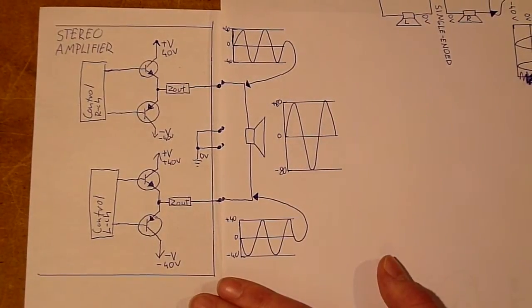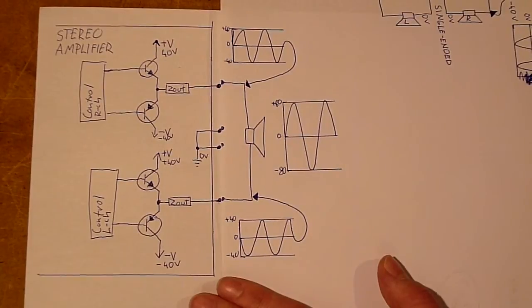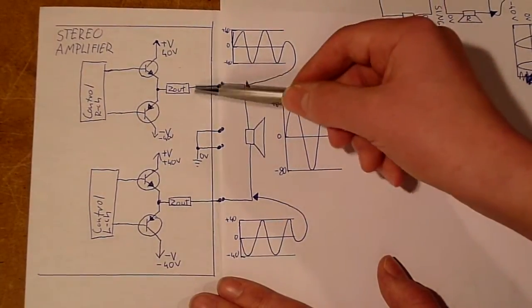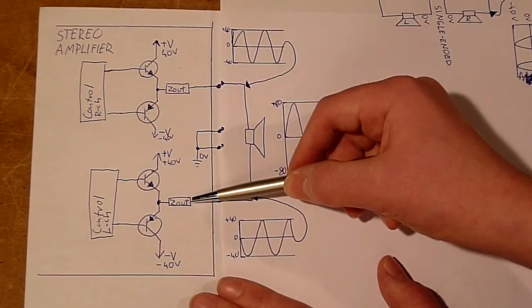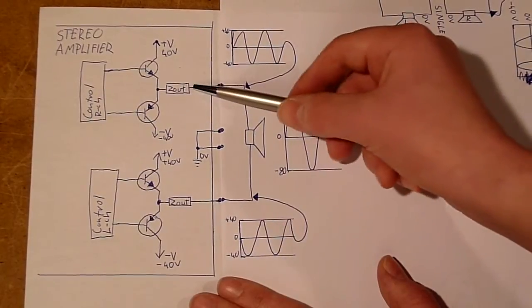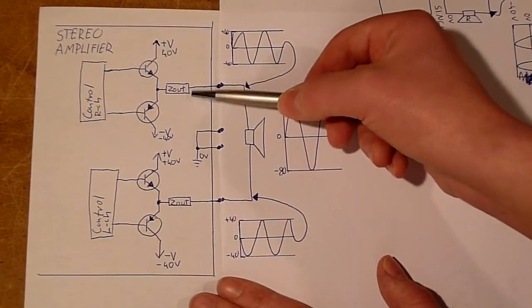However in theory there should be some drawbacks as well, because we have our output impedances here. So in single-ended mode we only have to consider one of them, say 0.1 ohm,